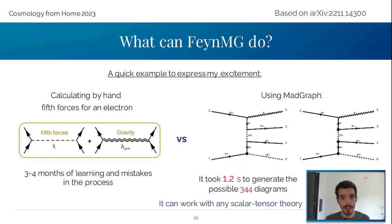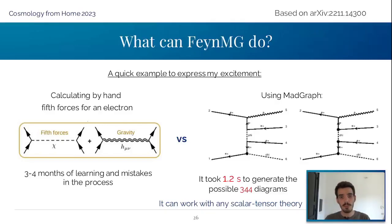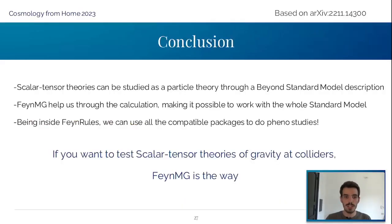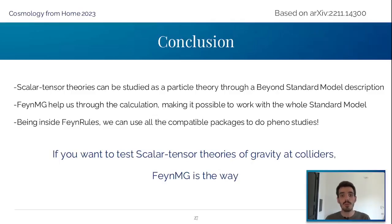It is really good at doing it, and it's going to save you a lot of time to actually consider different models and find the one that gives the best observations or constraints for modified theories of gravity. Moreover, these packages can work with any kind of scalar tensor theory — it is not only for Brans-Dicke theories. As a conclusion, scalar tensor theories can be studied as particle theory through a beyond-standard-model description, and FeynmG helps you through that calculation. Once you have that inside FeynRules, you can use all the compatible packages to do phenomenology studies and hopefully discover something new in any particle accelerator.